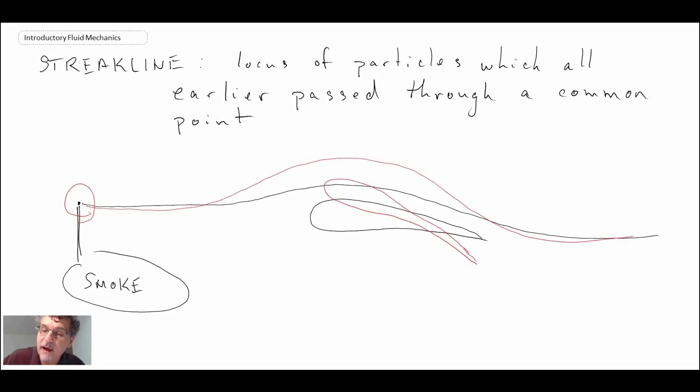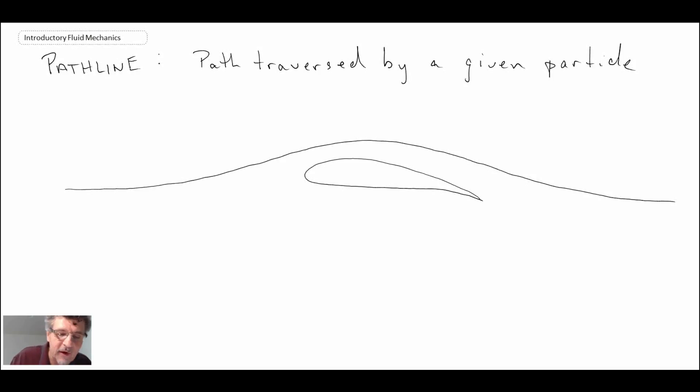The next thing that we'll take a look at is a pathline. The definition of a pathline is it is the path traversed by a given particle. So again, we'll use our airfoil example. Let's say we were to release a particle into the flow. I'm going to cheat here. I'm going to draw my streamline because I won't be able to put the particles on it perfectly.